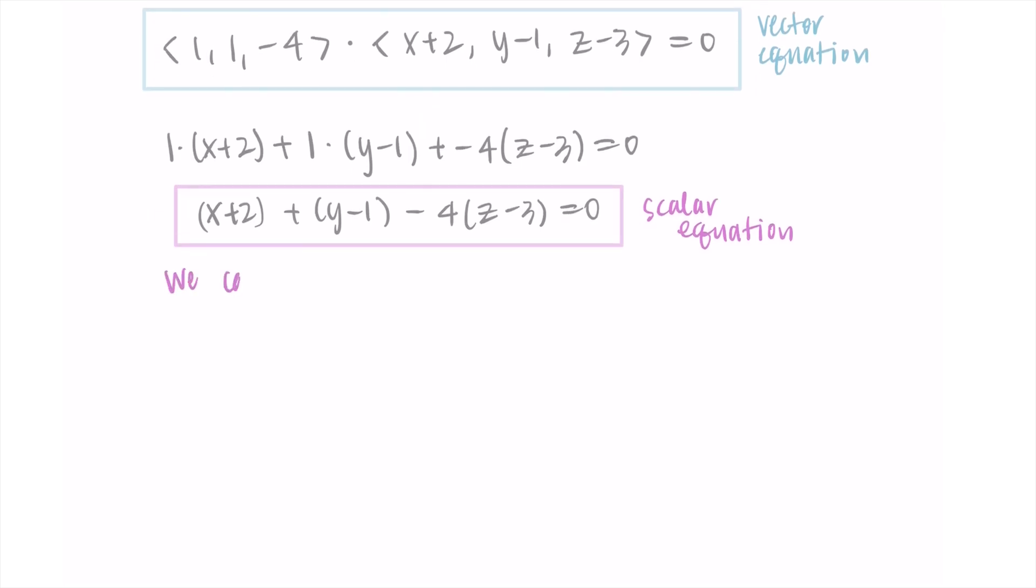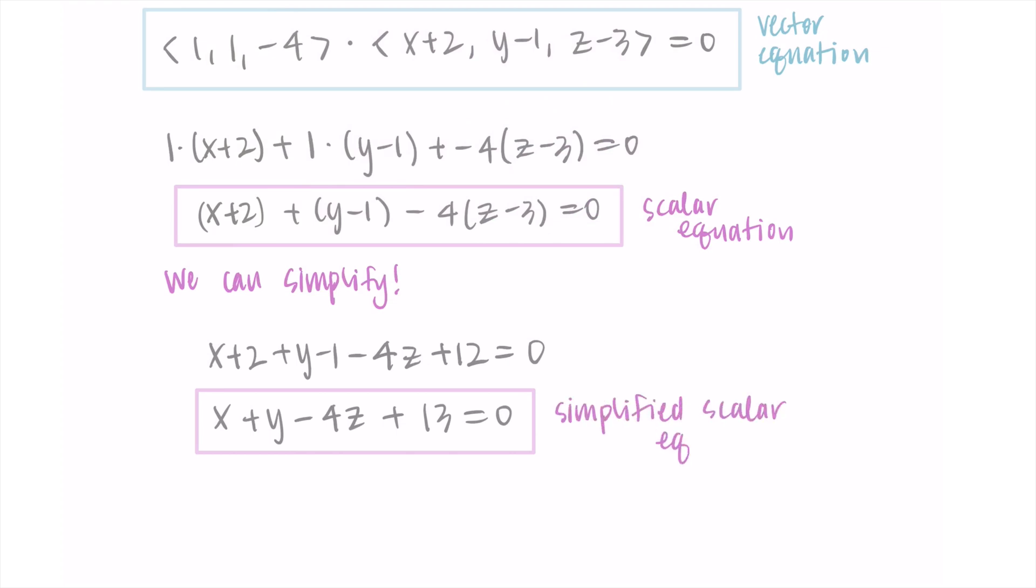However, we have some unnecessary parentheses here, and really we can simplify this pretty easily. So let's go ahead and do that. Also, simplifying your answer usually makes it easier to compare to other ways of solving. So if you're doing this with someone, or you're trying to compare to solutions, simplifying this is going to make it easier to do that, to compare between answers. So I'm going to get rid of the parentheses on the first two terms, and then I'll distribute that negative four. So I have negative four z plus 12. Now I can combine like terms. So I still have x plus y minus four z. But when I combine all of the constants, I'm getting a plus 13. So x plus y minus four z plus 13 is going to be my simplified scalar equation. And often you'll even see that plus 13 on the other side. Either way is fine. This is our scalar equation of the plane.